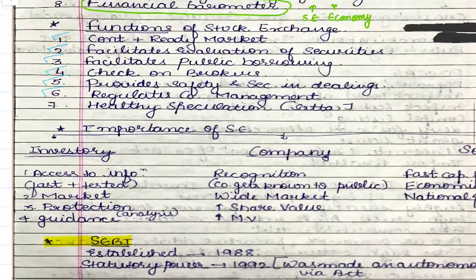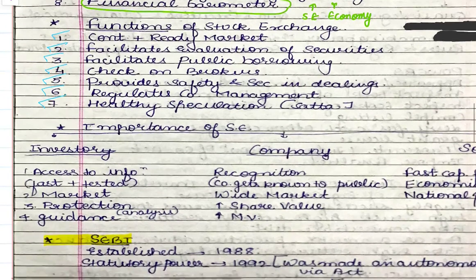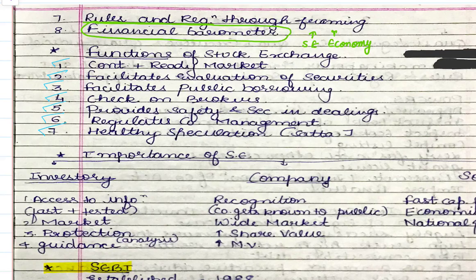Stock exchanges also encourage healthy speculation - that is, speculating or predicting the price direction of a share in a healthy manner. Not based on complete fortune or luck or chance, but on study - fundamental analysis karke, company ke balance sheet ko padhke, ratio analysis karke, ya fir technical analysis karke, past share prices ka movement dekhke, statistical tools laga ke yeh pata kiya jaata hai ki uski price kis direction mein jaayegi. Stock exchanges promote this healthy speculation, which attracts people to invest their savings in the share market, putting blocked funds into fruitful areas, benefiting the investor, the company, and ultimately the economy.